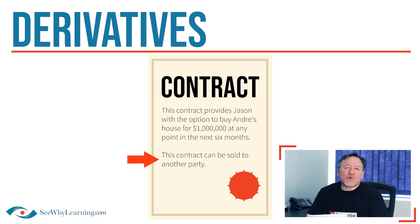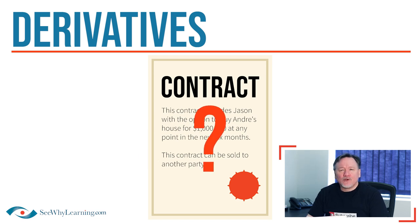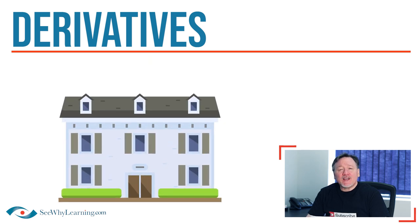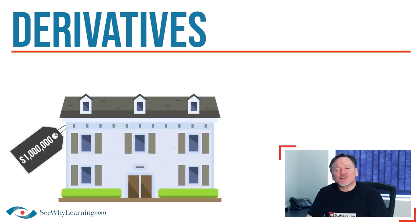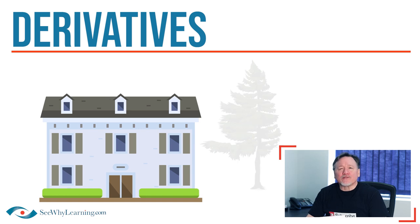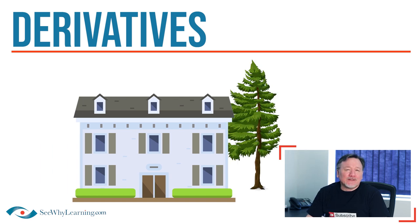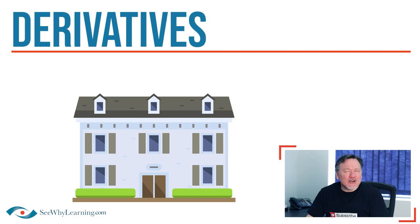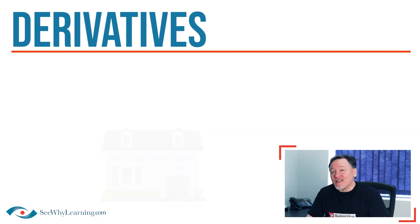Let me ask you a question. What do you think this contract is worth? What else would you need to know? I have the option to buy Andre's house for $1 million, but what is it actually worth today? Is it in the Toronto market, where land is limited and expensive? Or is it way up north, where land is somewhat plentiful and not quite as expensive? Does the house look like this, or does it look like that?